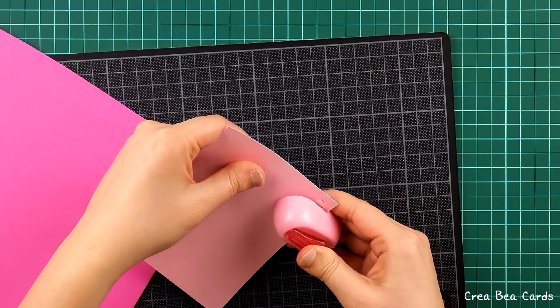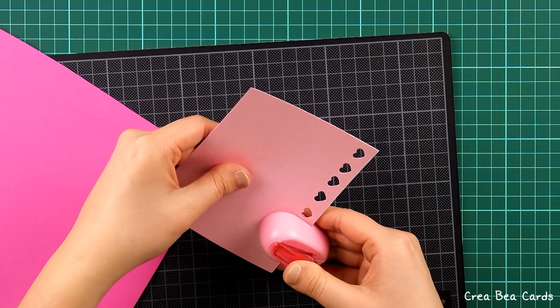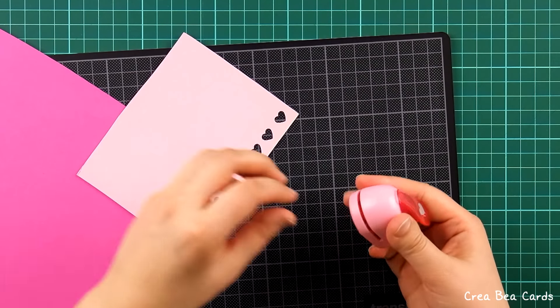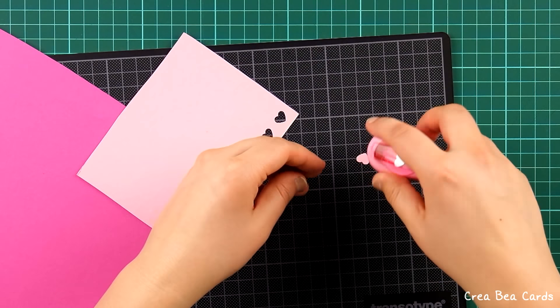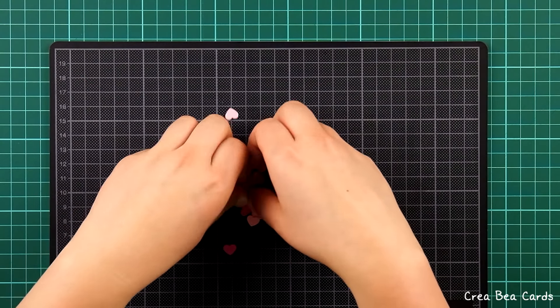Use a heart punch to create a lot of small hearts, about 25 to 30 hearts of each color. Mix the colorful hearts together.